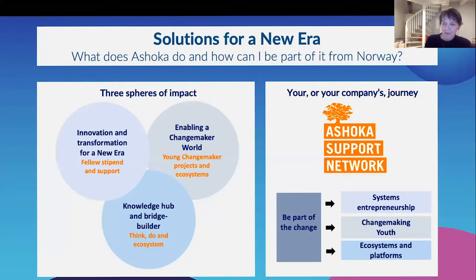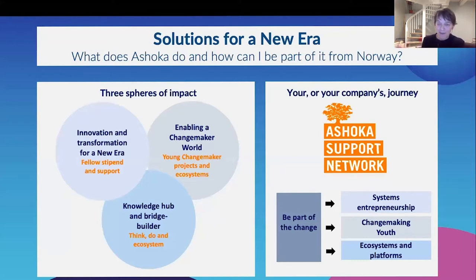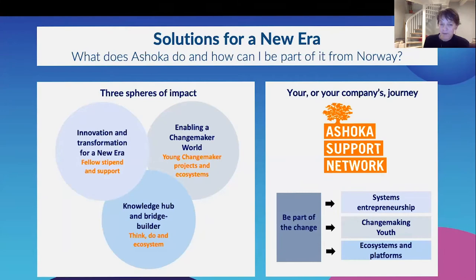This was the subject at the beginning of our Ashoka Changemaking Summit. What I'd like to do is first look at what Ashoka does and then look at how you who is watching this could be part of this from Norway. So the diagram on the left here looks really about what Ashoka does — we have three spheres of impact. One is about innovation and transformation for a new era, and we do that really by supporting fellows through giving them stipends and different kinds of support and networking.